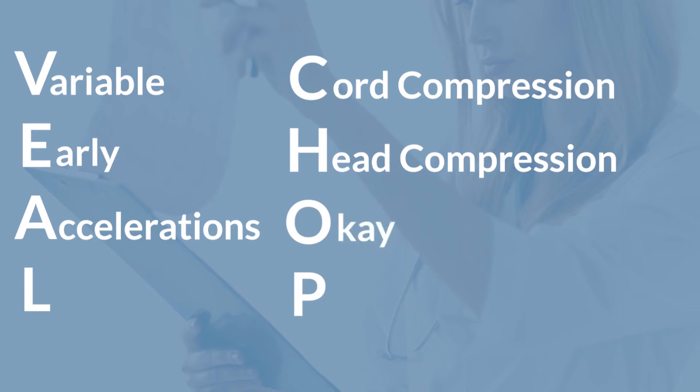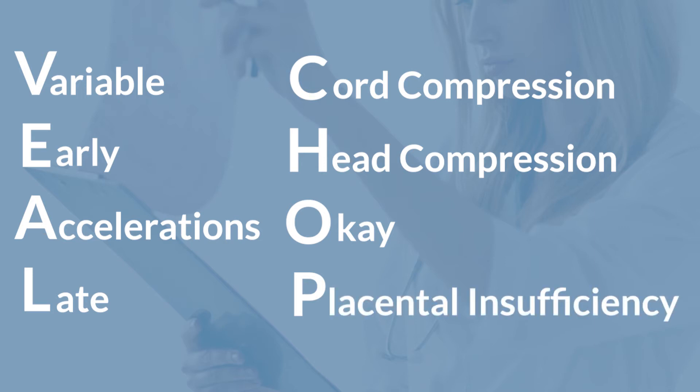Now let's take a look at L. L is late decelerations, and what that means is you could have P for placental insufficiency. That means there is some oxygen that's not getting to the fetus, and so what we have to do is make that happen — most of the time by going to the OR and delivering the baby by C-section.